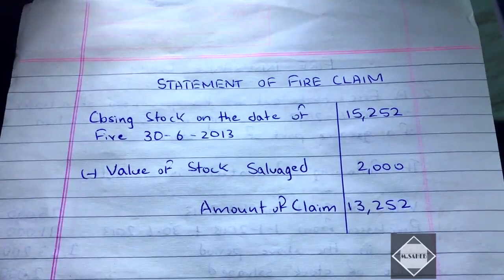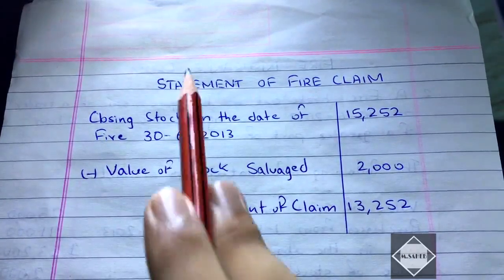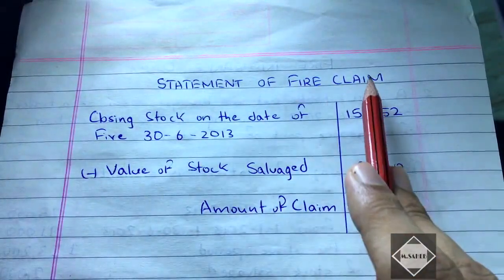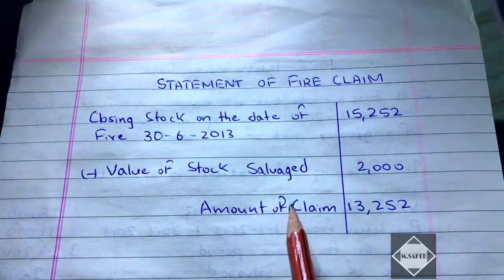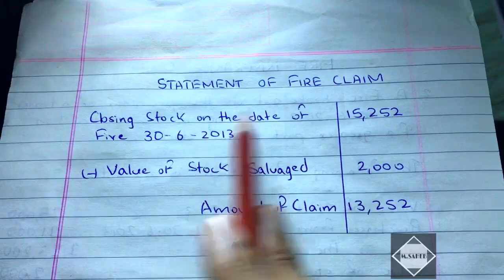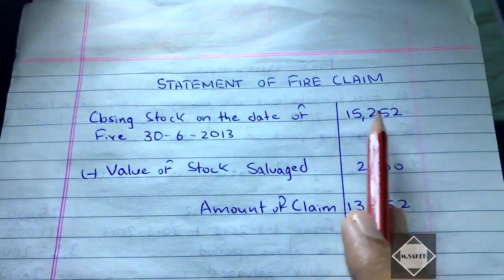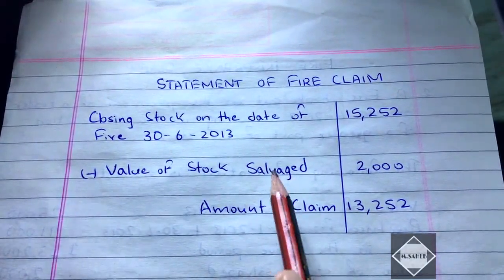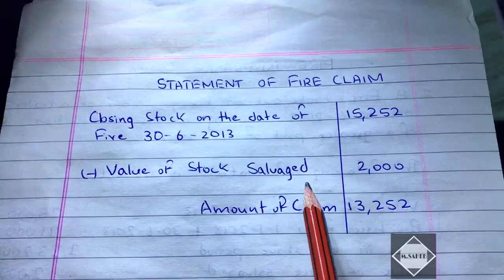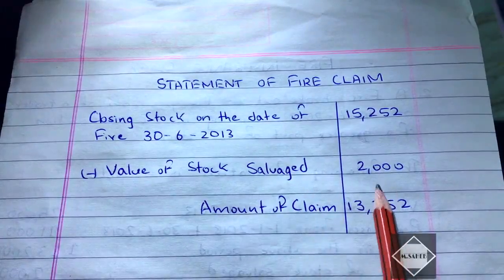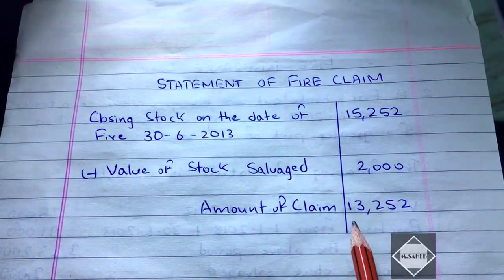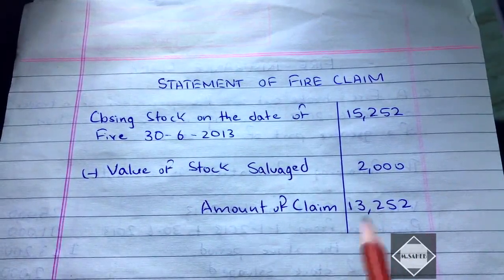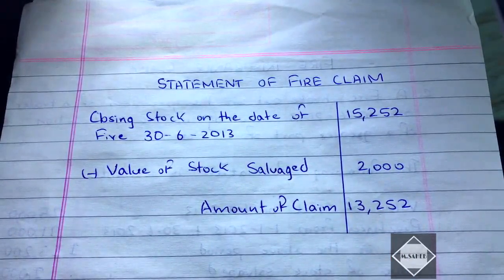Finally, we prepared the statement of fire claim. We took the closing stock of 15,252 and subtracted the salvaged stock value of 2,000 — the stock saved from the fire — to get the amount of claim as 13,252.